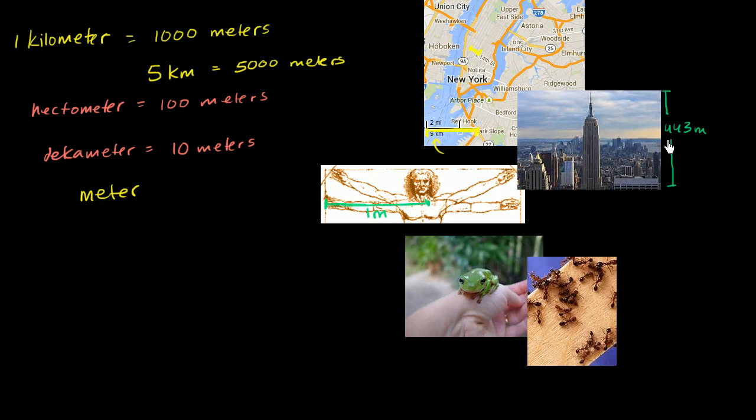And I'm going to write these in orange because they're not that frequently used. For example, no one would ever say, or it's not typical to hear someone say that the Empire State Building is 4.43 hectometers, or for them to say that this is 44.3 decameters. They would typically say that this is 443 meters.